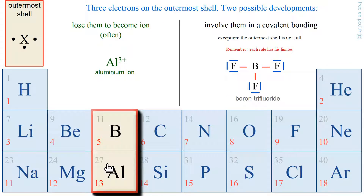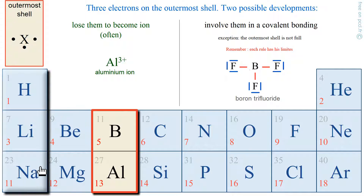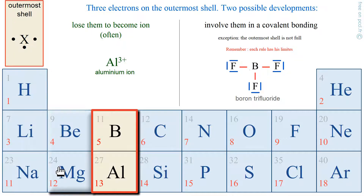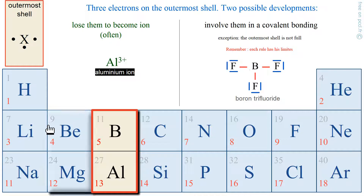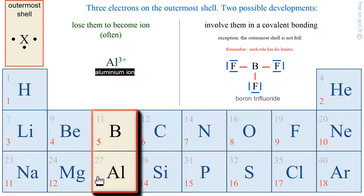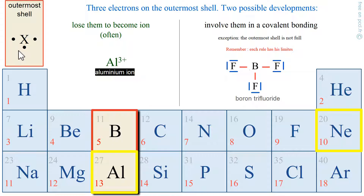Here you have Li3+. Na+, Mg2+, Al3+. Aluminum is placed in the filling of the shells with atomic number 13, so K2L8M3. If it loses those 3 electrons, it will have the same electronic structure as neon, which is the closest inert gas.